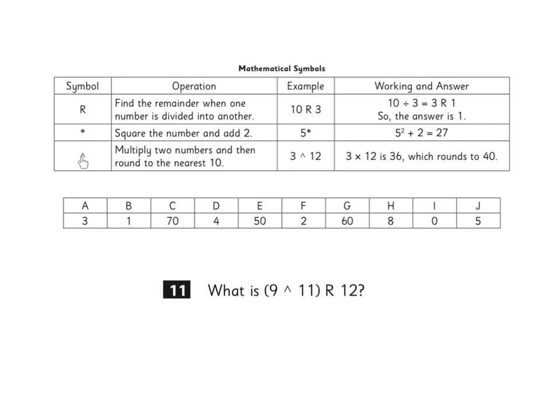We have a list of the symbols here and what they mean within a calculation. As you can see, when this symbol is used, it means that we should multiply the two numbers together and then round to the nearest ten. Because we have a calculation within a bracket, we should do that first.